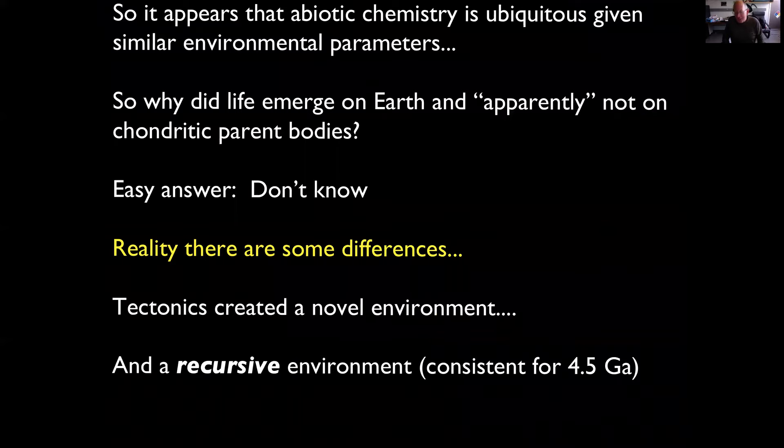It appears that abiotic chemistry is ubiquitous given similar environmental parameters. So why did life emerge on Earth and apparently not on a chondritic parent body? The easy answer is I don't know. But there are real differences: a carbonaceous chondrite undergoing aqueous alteration in its interior follows a one-shot pathway — it starts out of equilibrium, drifts toward equilibrium in one direction, and doesn't go forever.